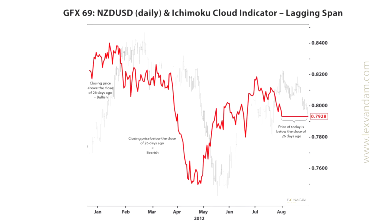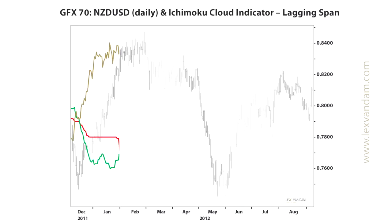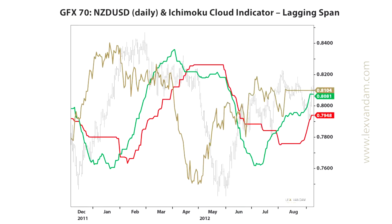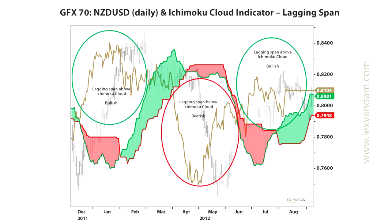The line in red plots the current closing price 26 days earlier on the chart, hence the name lagging span. As a result, this lagging span tells you if the price today is higher or lower than the closing price 26 days ago. If the price is higher today, it is considered bullish, and if it is lower today than where it was 26 days ago, it is considered bearish. If you combine the lagging span with the cloud, you can generate trading signals. If the lagging span is above the cloud, it is considered bullish, and if it is below the cloud, it is bearish.